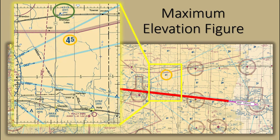On the topic of altitudes, each quadrant on sectional charts includes a maximum elevation figure, seen here circled in orange. The max elevation figure indicates the height of the highest feature within the quadrant, rounded up to the nearest 100, plus 100 feet.